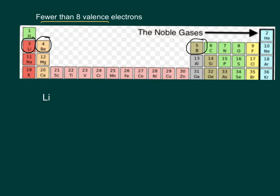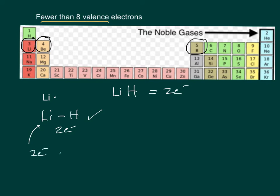Lithium and beryllium are metals, but they're so tiny they actually form covalent bonds. Lithium has 1 valence electron and tends to form 1 bond with no lone pairs. For example, LiH has 2 valence electrons, and that's the correct structure — but lithium doesn't fulfill the octet rule because it only has 2 electrons, not 8.